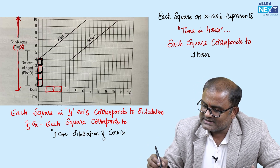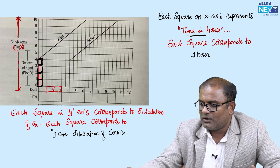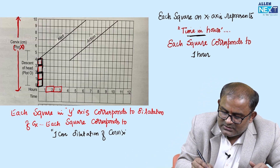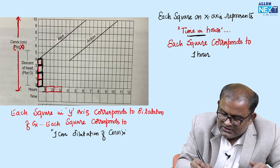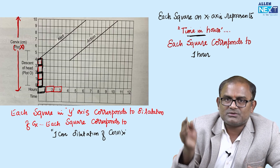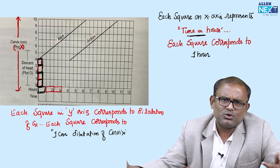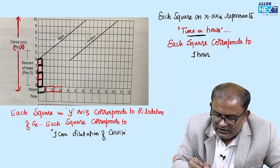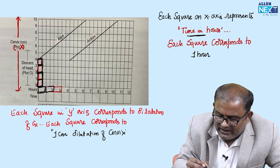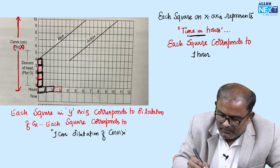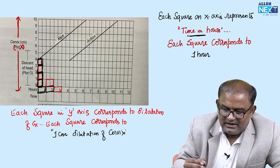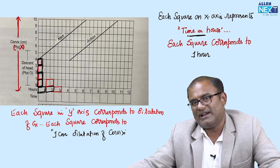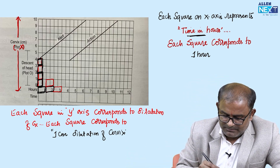Each square on the X-axis represents time in hours, and each square represents one hour. This is one big square — within this one big square, there are two small squares. So two small squares equals one hour, or one big square equals one hour.